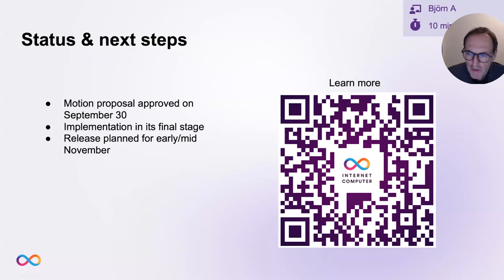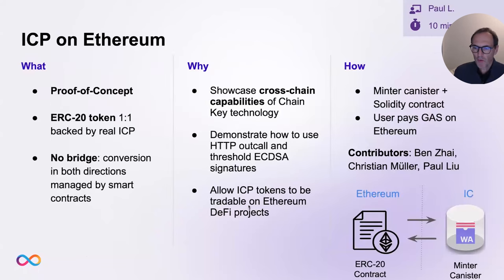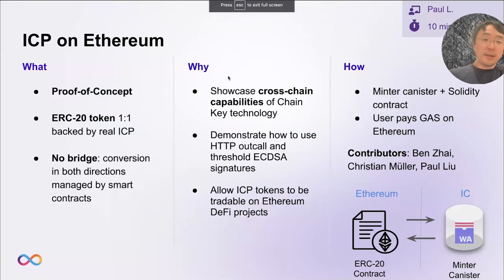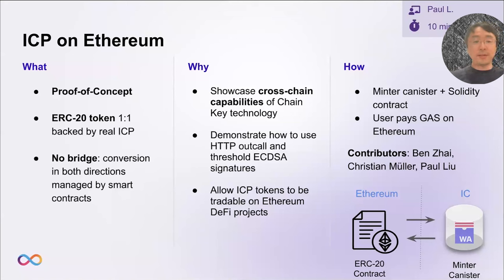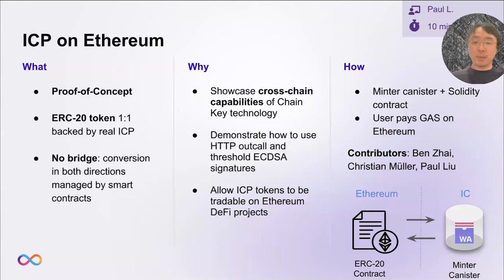Thanks, Björn. Very exciting. Some of you might have seen a tweet a few weeks back where somebody traded ICP on Uniswap for $80 and wondered what the heck is going on. ICP on Ethereum was a project put together in just a couple of weeks by a small team — Ben was the main contributor laying out the design and foundational work. It's a proof of concept, and the main purpose is to provide an ERC-20 token on Ethereum for ICP, one-to-one backed by real ICP held in an IC canister, to showcase the cross-chain capabilities of chain key technology.